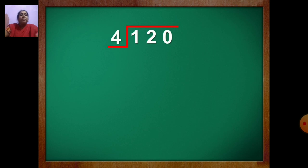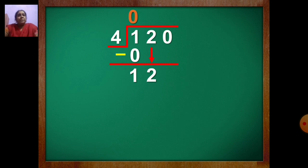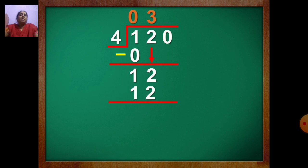So put 0 first. 4 zeros are 0. Draw the line, put the sign of minus — 1 minus 0 is 1. Now bring 2 down. Which number did you get? 12. Now in table of 4, when you get 12 — 4 threes are 12. Write 3 up, 12 down. Draw the line, put the sign of minus. 2 minus 2 is 0, 1 minus 1 is 0.